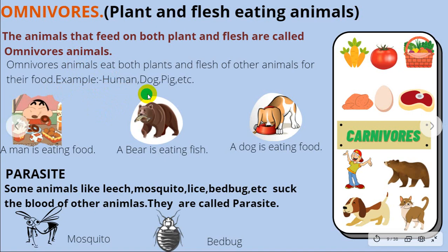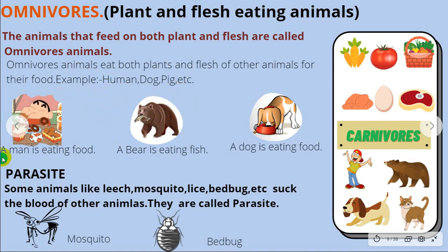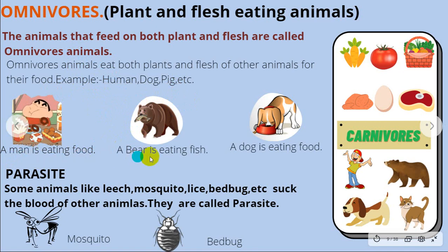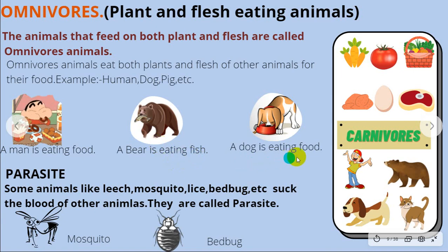Examples of omnivorous animals are humans, dogs, pigs, and bears. A man is eating food, a bear is eating fish, and a dog is eating food.